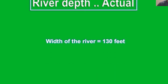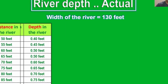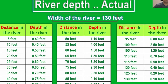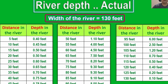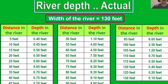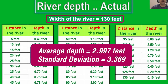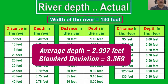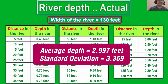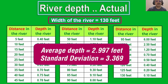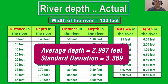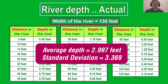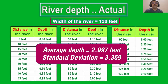Now consider checking out the actual depth data of the river. The table depicts measurements for the depth taken in feet from one bank to the opposite bank at every 5 feet interval. The river is about 130 feet wide. With this data, the average depth of the river comes to a little less than 3 feet and the standard deviation of the spread being wide. However, it does not answer the question: how wide is wide?